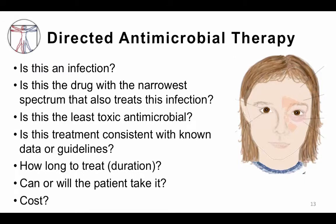At the time of transitioning to directed antimicrobial therapy, it's a good opportunity to think through several steps. Make sure the pathological process is indeed an infection and not another process. Choose the drug with the narrower spectrum so you don't inadvertently destroy all the other good bacteria colonizing the patient. Choose the drug that's least toxic. Ensure your choice is consistent with treatment guidelines or available data. Determine how long to treat — most infectious diseases are treated with antibiotics for far too long. Confirm the patient can and will take the medication. And finally, consider cost — treat with the least expensive antibiotic that adequately treats the infection.